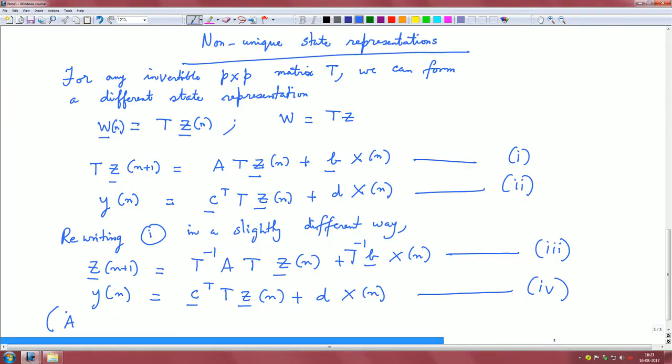Your a tilde, b tilde, c tilde, and d tilde will now be T inverse A T, T inverse b. And then c transpose is what we had. c transpose is basically now c transpose T transpose, and then d.